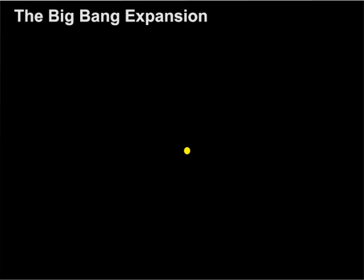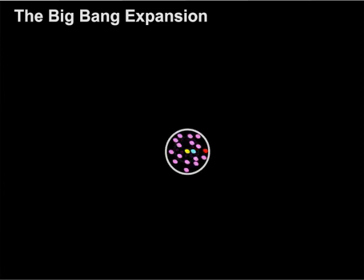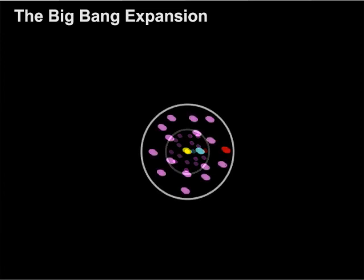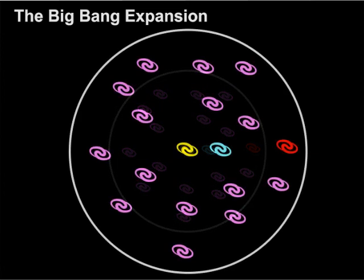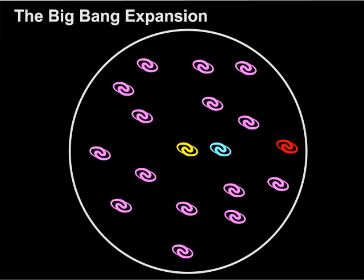These galaxies then collected together to form superclusters of galaxies. As the universe continued to expand, the galaxies moved further away from each other, and the further away they were from our galaxy, the faster they were moving. Imagine the universe is like a huge balloon with dust particles inside it. As the balloon expands, every dust particle moves away from its nearest neighbours, and the further particles will be moving very rapidly away from those near the centre.